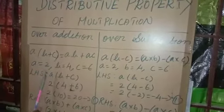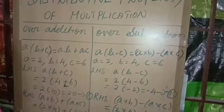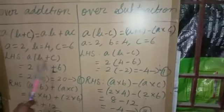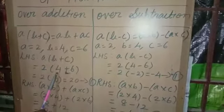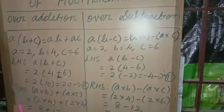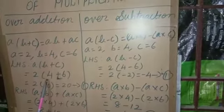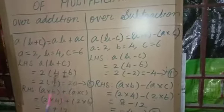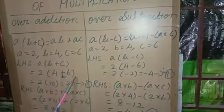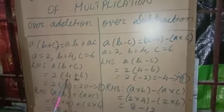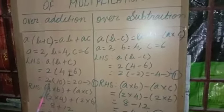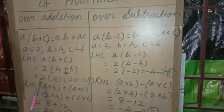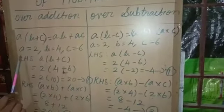So this is LHS. LHS is A into B plus C. Instead of A, I have taken 2. Then you put a bracket, and inside the bracket write the values of B and C. B value is 4, C value is 6. You should add 4 with 6 first because these two numbers are inside the bracket. 4 plus 6 is 10. Now multiply 2 with 10 — 2 into 10 is equal to 20. This is the LHS.